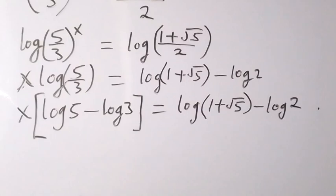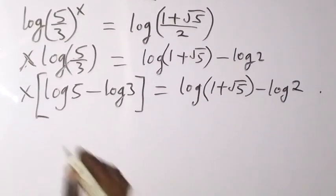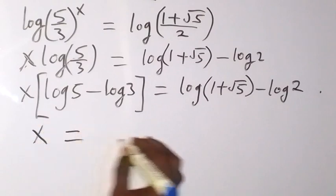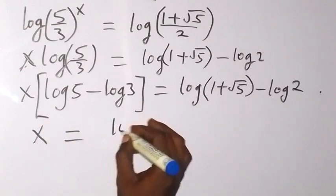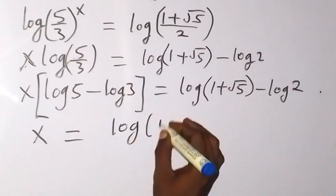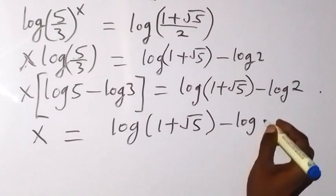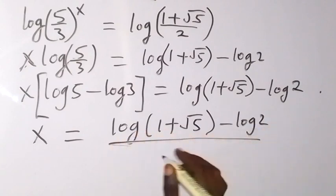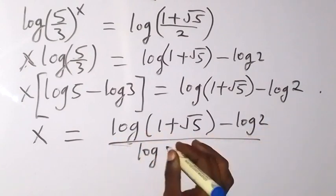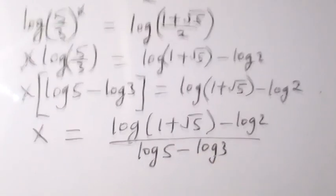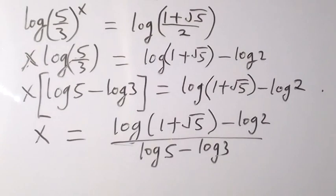Therefore, to get the value of x, we divide both sides by (log 5 minus log 3), and x will now be equal to (log(1 plus root 5) minus log 2) divided by (log 5 minus log 3). And that will give us the solution to our problem. Thank you for joining us and don't forget to subscribe to this channel for more of our videos. See you in the next class, bye for now.